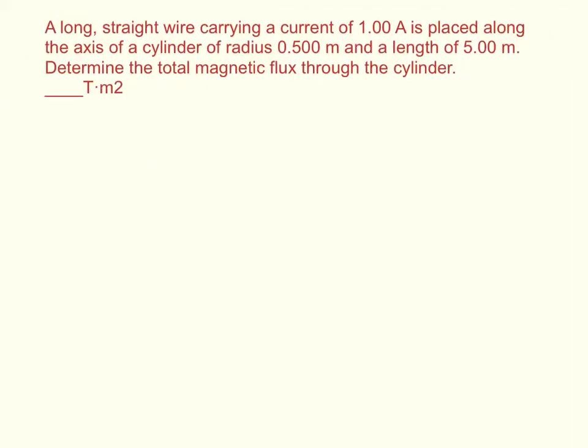A long straight wire carrying a current of 1 amp is placed along the axis of a cylinder of radius 0.5 meters and length of 5 meters. Determine the total magnetic flux through the cylinder.